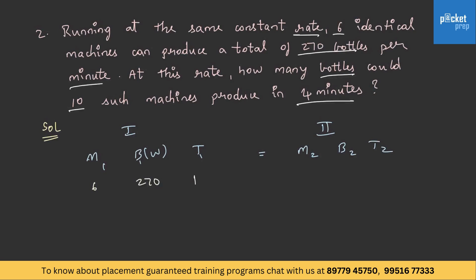In the first statement there are 6 machines and the number of bottles is 270 and the time taken is 1 minute. In the second case, we are asked to find out how many bottles, so we do not know this value, this is X. 10 such machines, so there are 10 machines and the time given is 4. So as we all know, we need to interchange the works. Therefore, 6 into X into 1 is equal to 10 into 270 into 4. Therefore, X is equal to 10 into 270 into 4 by 6. On simplification you will be getting 1800, so the value of X is 1800.